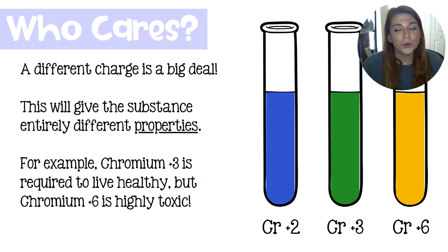Then finally, who cares? What difference does it really make? Well, the charge is kind of a huge deal. We've already discussed how the different charges on copper can give copper bonded to chlorine different properties. And here are three examples of chromium. Chromium plus two is a royal blue color. Chromium plus three is a nice bright forest green color. And then chromium plus six is this like mustardy gold color.